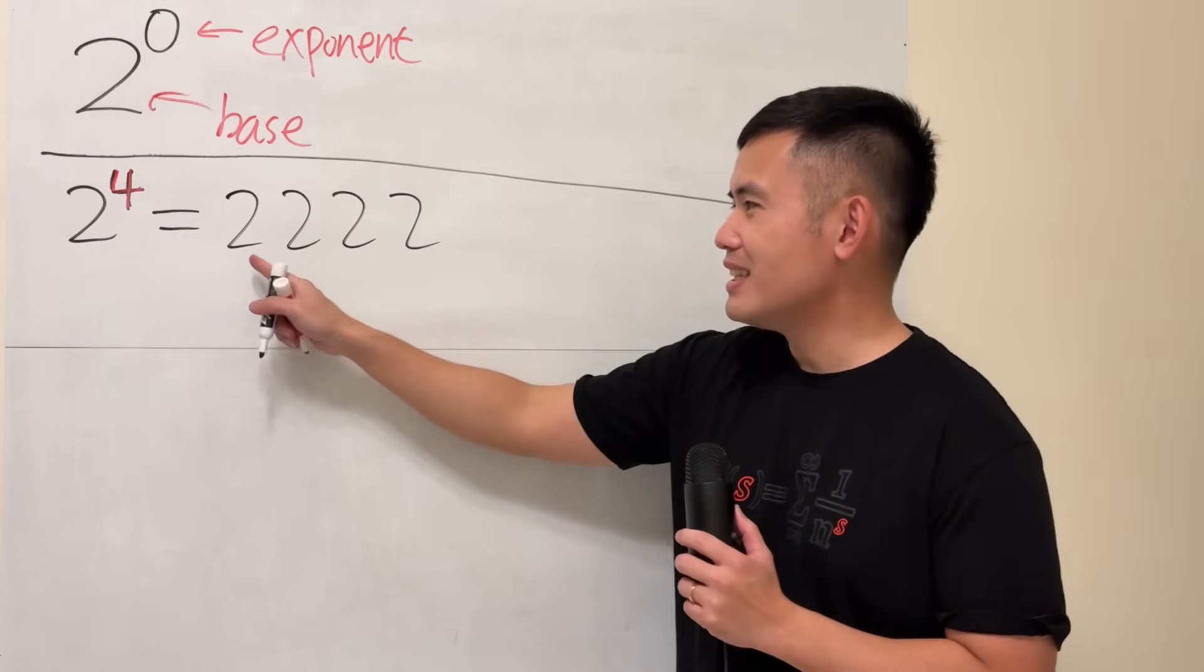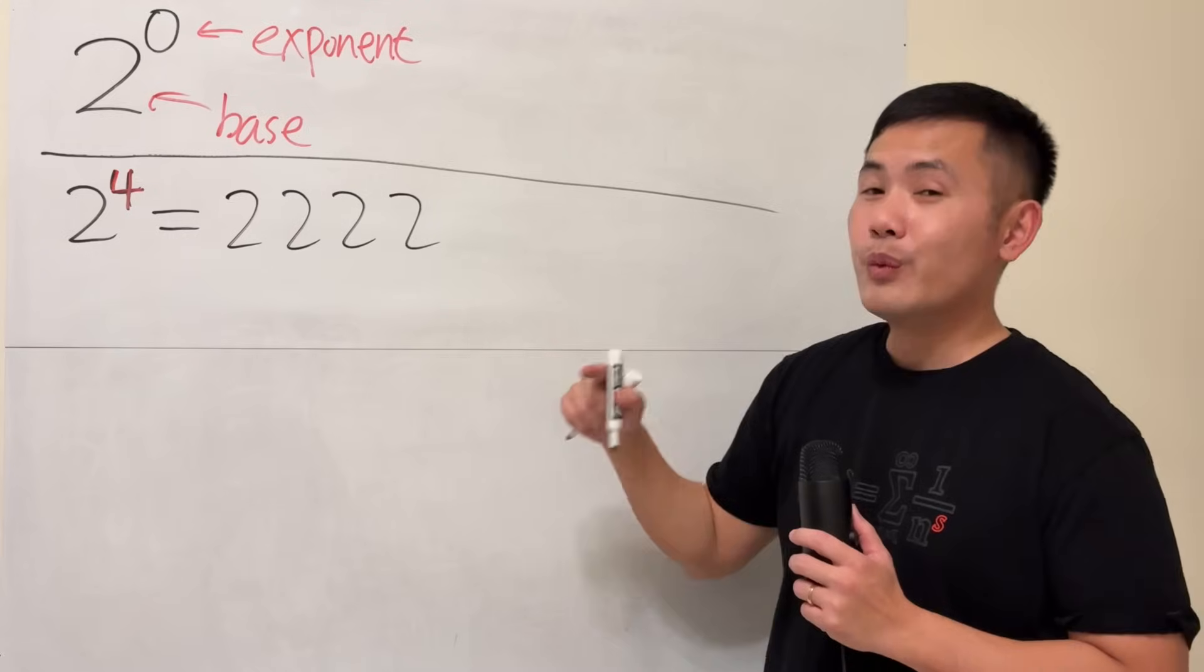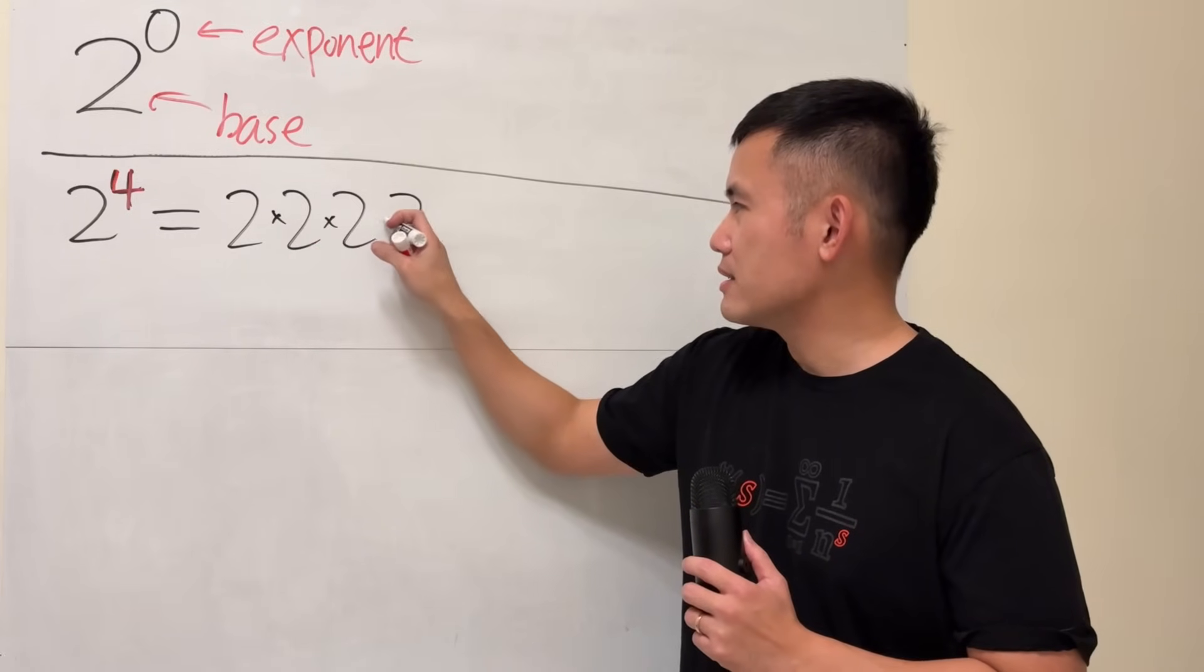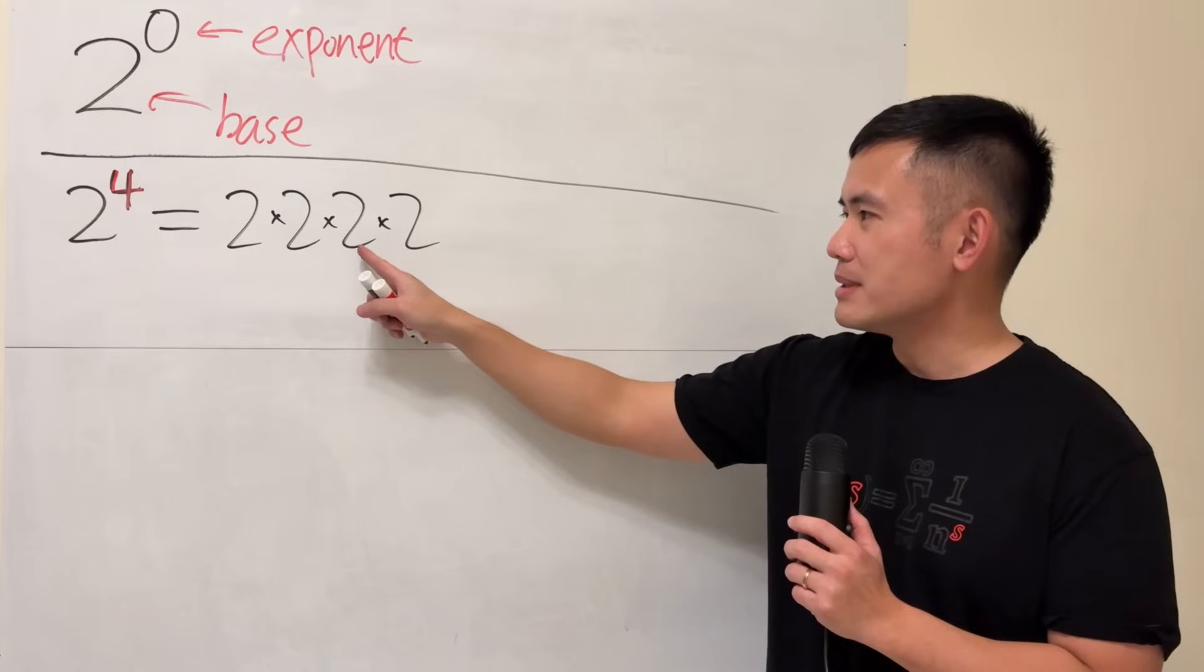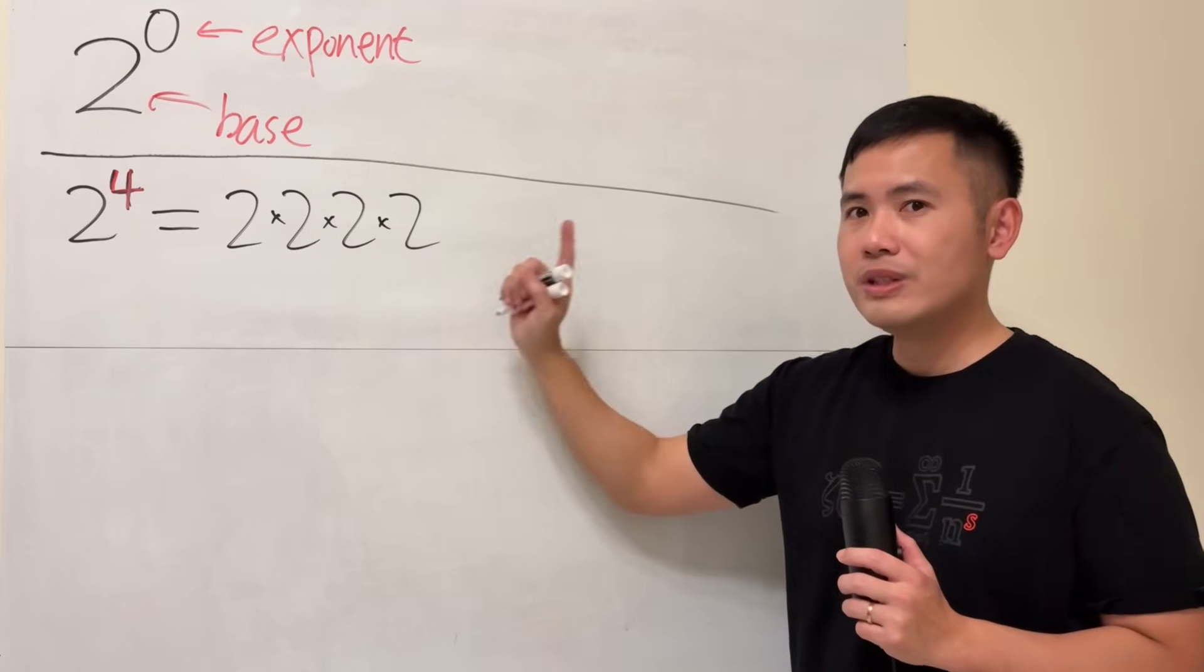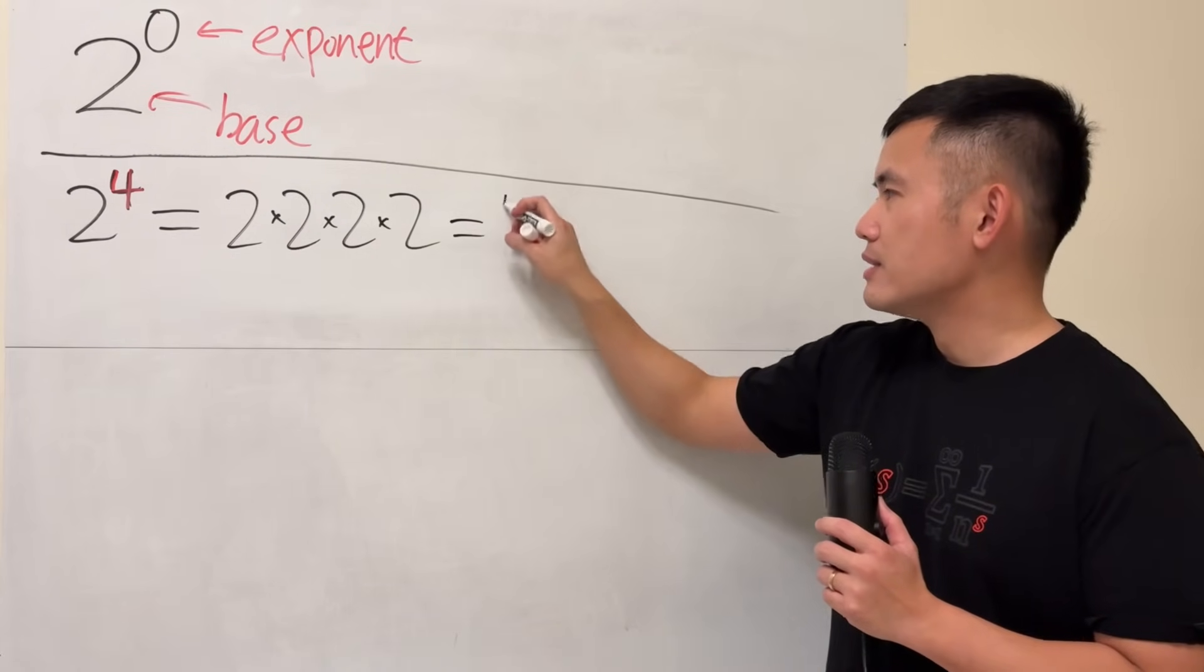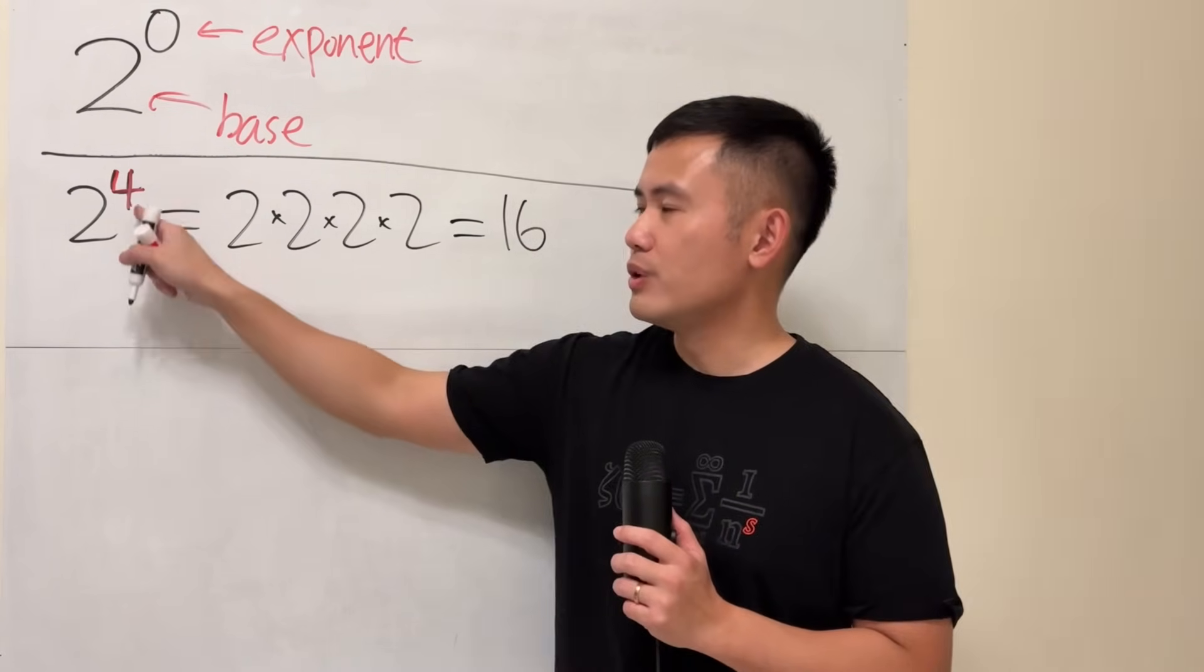But the answer is not 2,222. We have to multiply that. So it looks like this, and then worked out. 2 times 2 is 4, times another 2 is 8, times one more 2 is 16. So 16 is the answer for 2 to the fourth power.